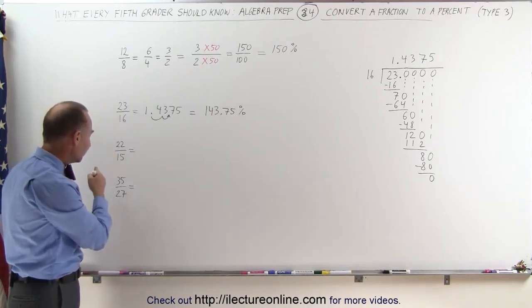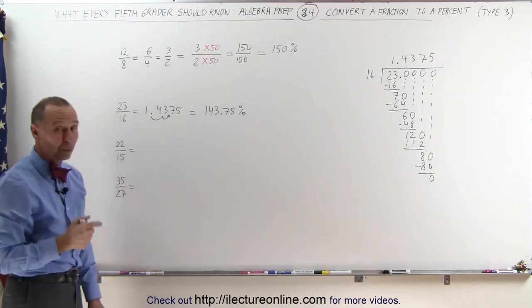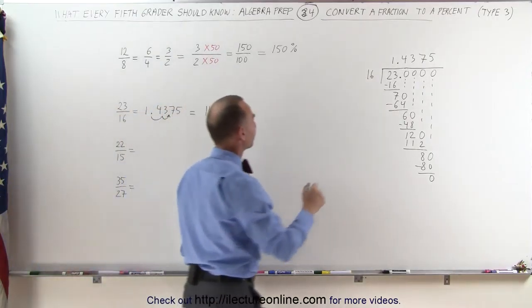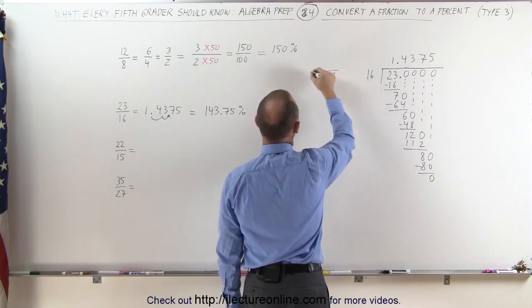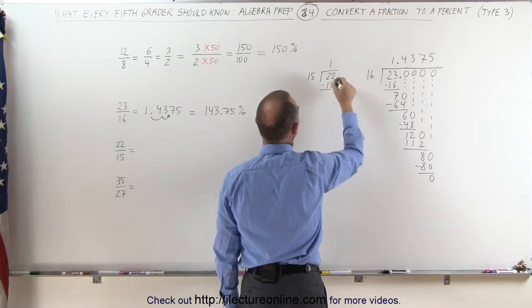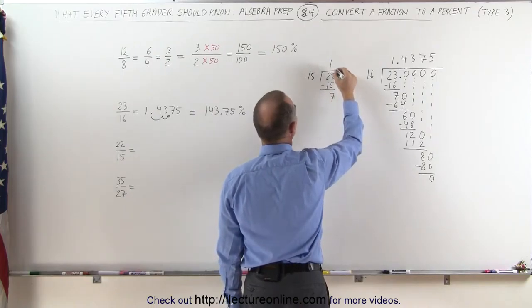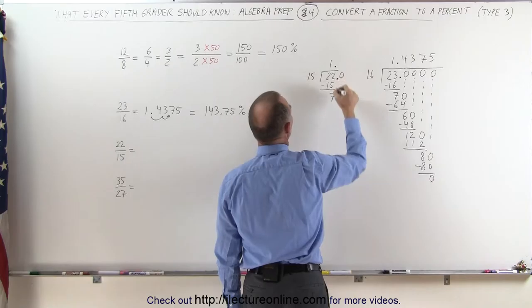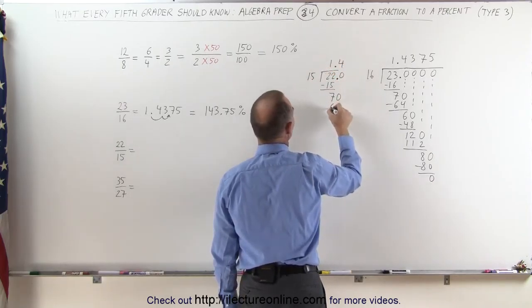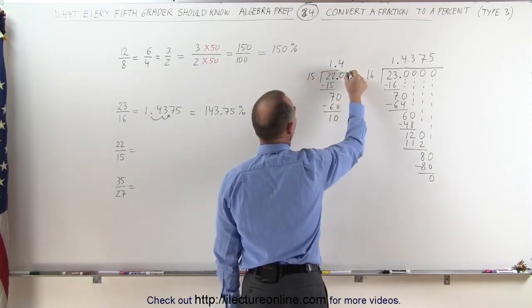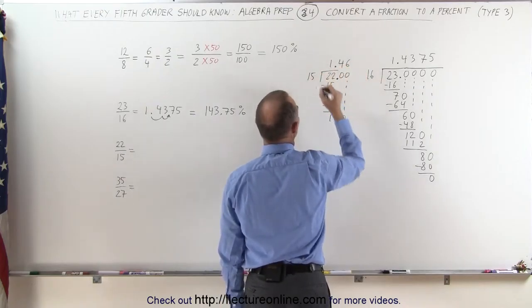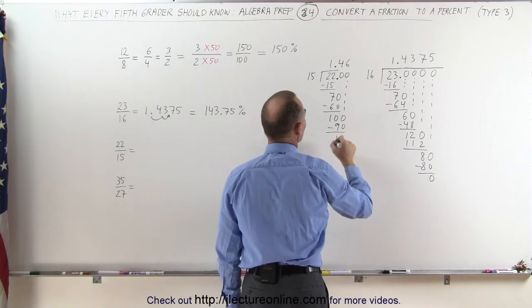let's see, can we simplify that at all? It doesn't look like it. So what we're going to do here is again do a longhand division, 22 divided by 15. 22 divided by 15, 15 goes in 22 one time. My remainder is 7, a decimal point there and a decimal point there. Add a 0, 15 goes into 70, 4 times, 4 times 15 is 60, the remainder is 10. Add another 0, 15 goes into 100, 6 times, 6 times 15 is 90, remainder is 10.